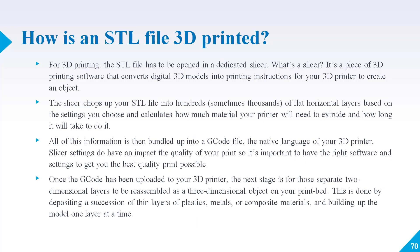Once the G-code has been uploaded to your 3D printer, the next stage is for those separate two-dimensional layers to be reassembled as a three-dimensional object on your print bed. This is done by depositing a succession of thin layers of plastics, metals, or composite material and building up the model one layer at a time.